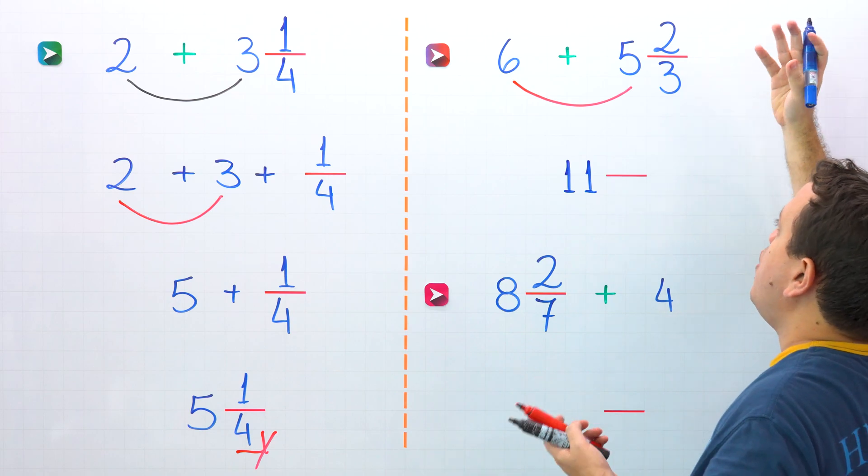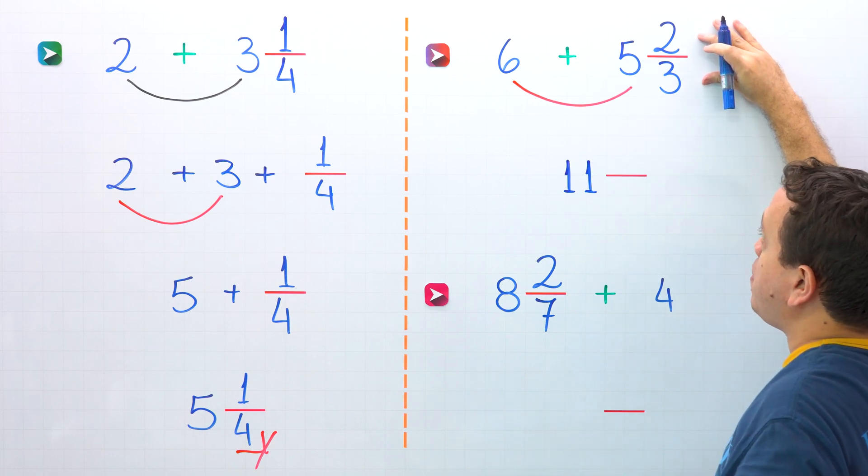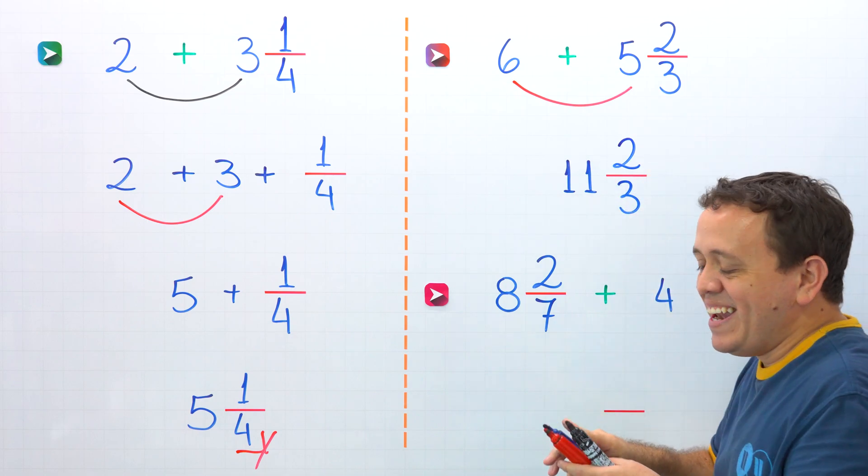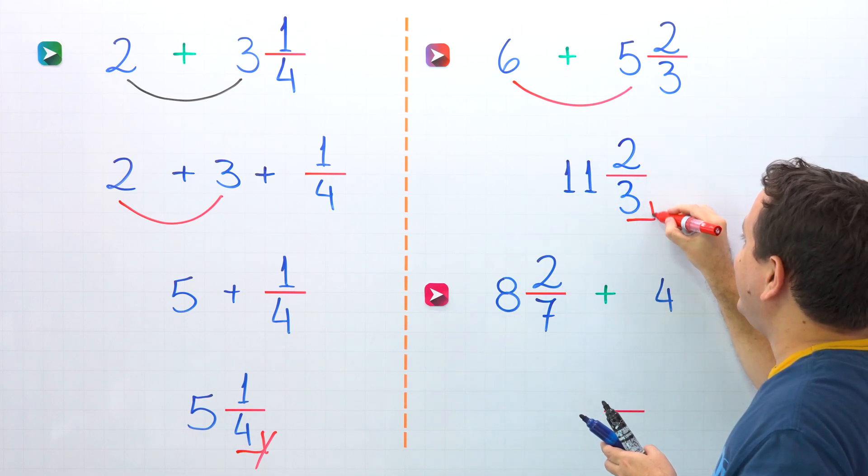Finally, we add the fractions, and we only have one fraction in this problem, and that fraction is 2 thirds. The final answer is 11 and 2 thirds.